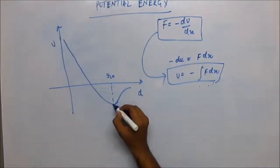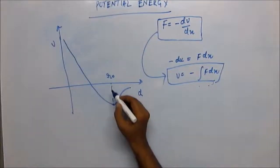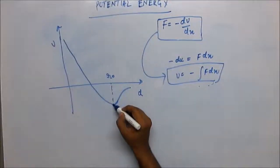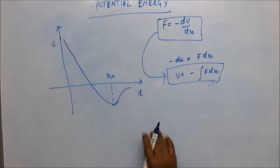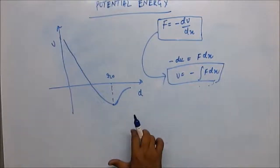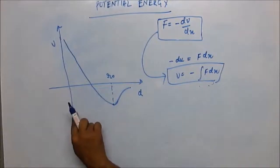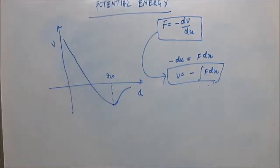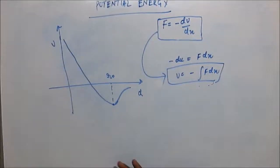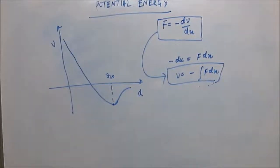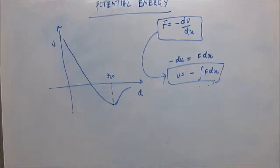You can see there is a potential well, and at the most stable position the potential energy is minimum. We will try and correlate why at the stable position potential energy is minimum, and what the conditions are for the potential energy to be minimum and the position to be stable.